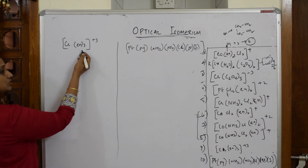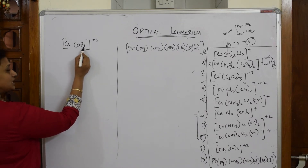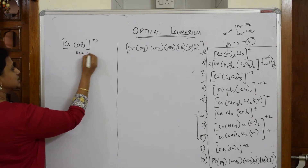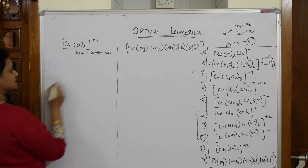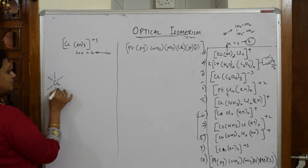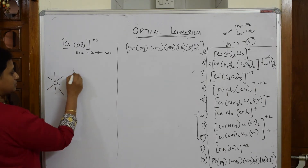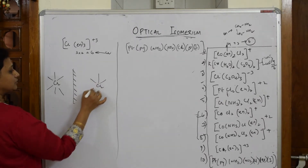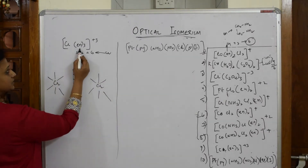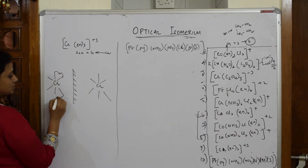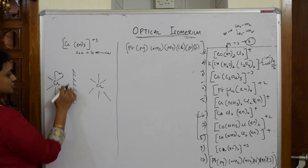Suppose this example is given and I have to draw the mirror image. Count the coordination number: each EN (ethylenediamine) will have two donor sites, so three EN gives three times two equals six. So the coordination number is six. I can draw positions one, two, three, four, five, and six. Now I have to draw a mirror image of this particular complex — one, two, three, four, five, and six. Observe the EN: start from here in the clockwise direction.